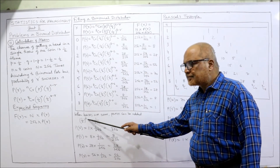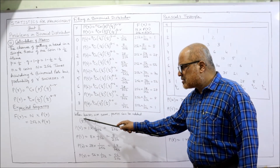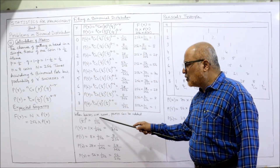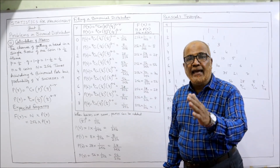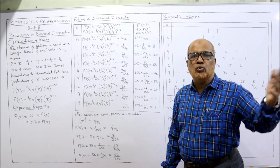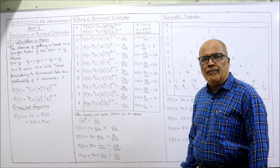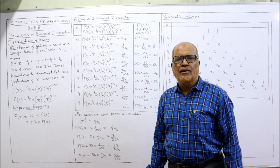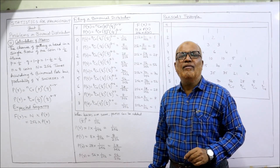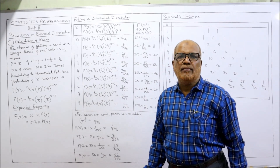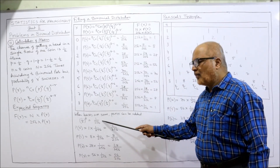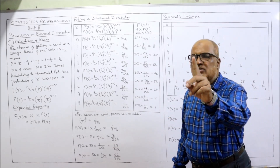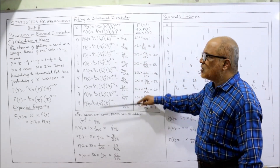(1/2)^8 means 1 multiplied 8 times in the numerator and 2 multiplied 8 times in the denominator. 1 multiplied 8 times is 1. For 2 multiplied 8 times: 2×2×2×2 = 16 (four times), and 16×16 = 256 (eight times total). So (1/2)^8 = 1/256. We calculate this only once because it is the same for all cases.